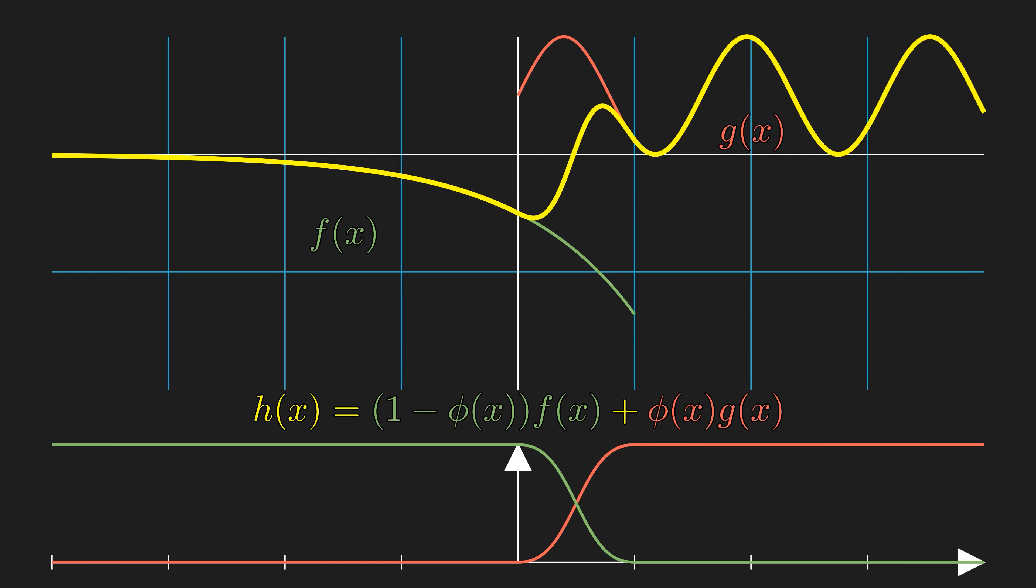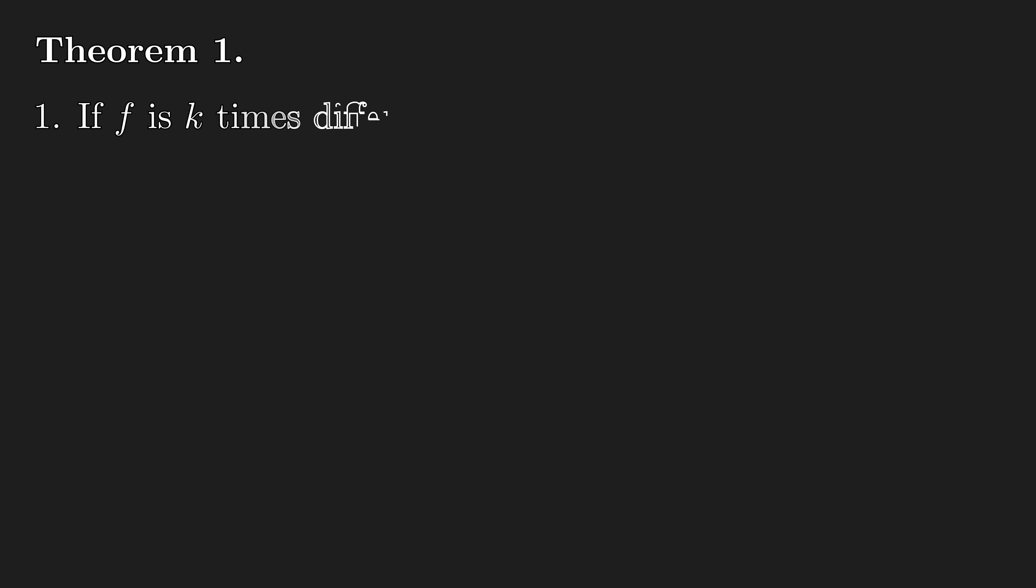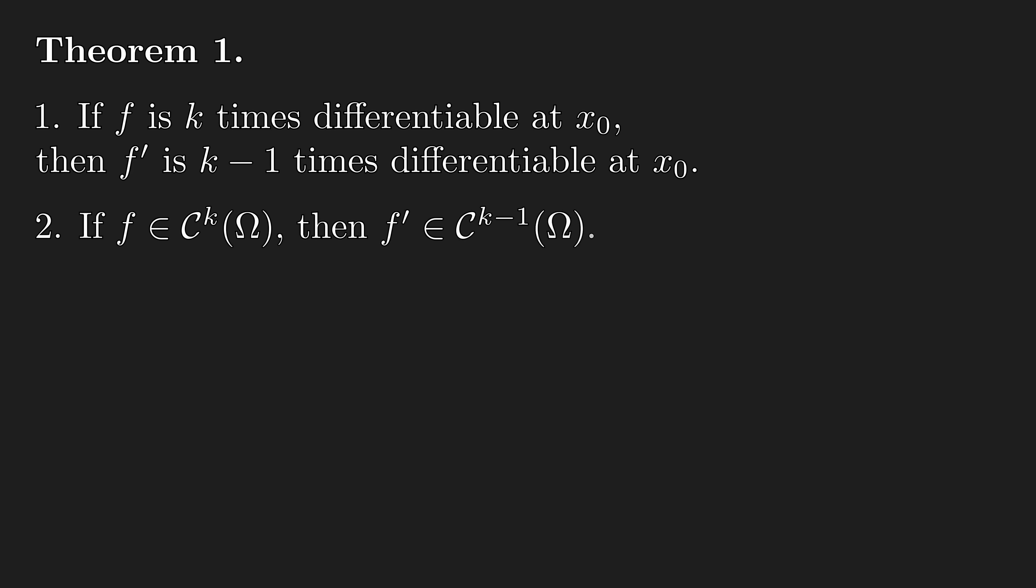For those of you who are students of college-level mathematical analysis, you may have noticed that I have skipped some key details in my argument, and I think this is a great time to pause to look at some important theorems. The first theorem says that if f is k times differentiable, then the derivative of f is k minus 1 times differentiable. And similarly, if f is in C^k, then f' is in C^(k-1). And lastly, if f is infinitely differentiable, then so is f'.